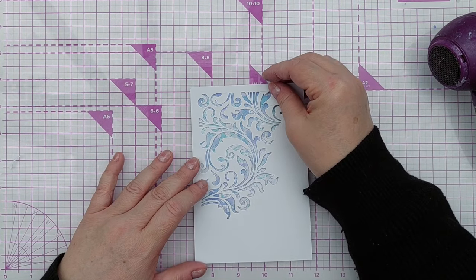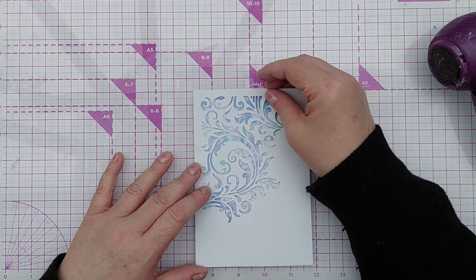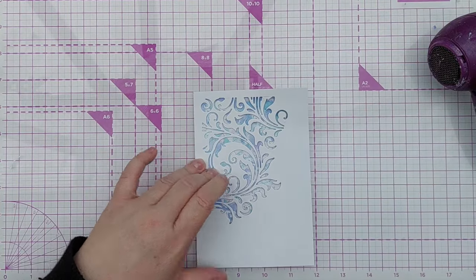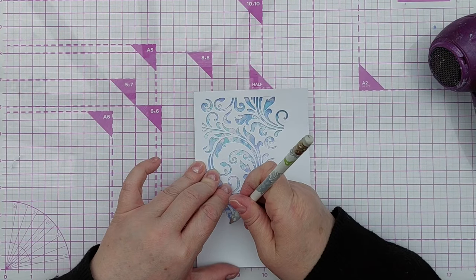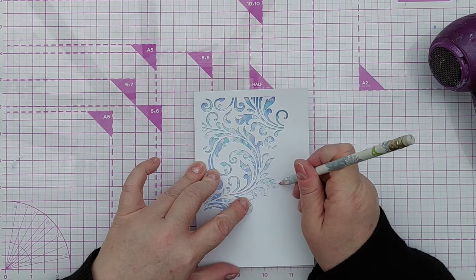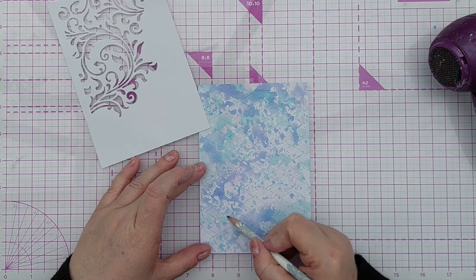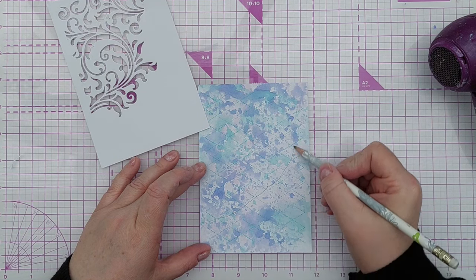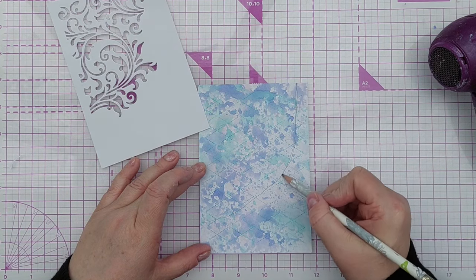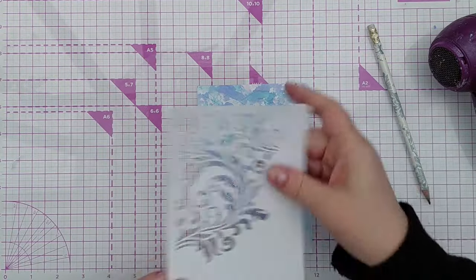Next, I popped my aperture over my background and took a pencil and made a few little dots where the edge of the aperture was going to be so I knew where to focus the next part of decorating my background. So some of it is going to get heat embossed with gold and some of it isn't, just to give me some flexibility.